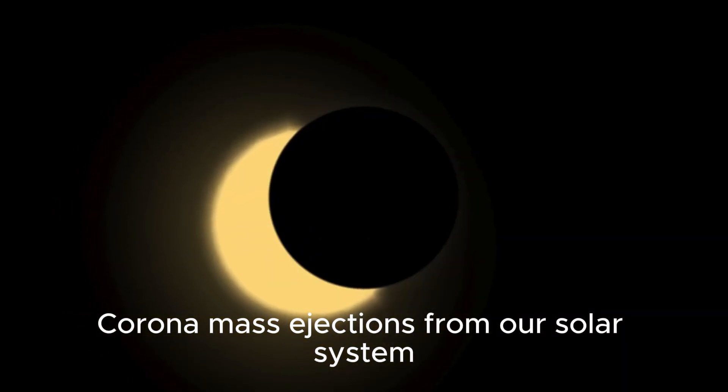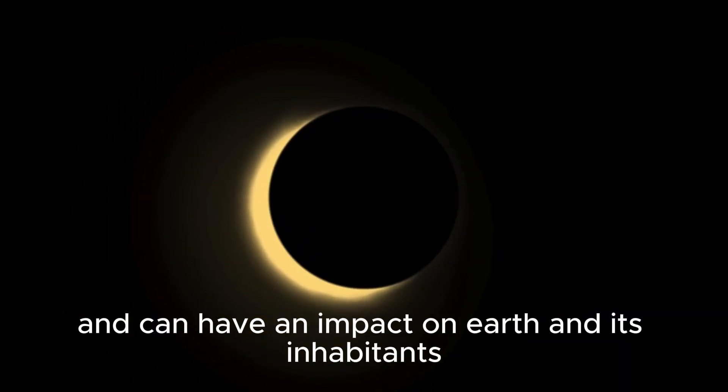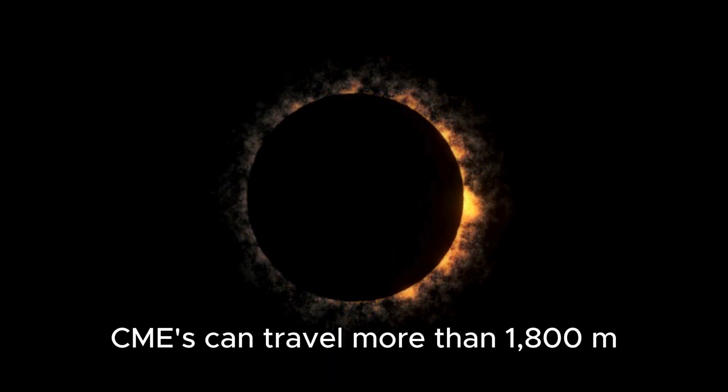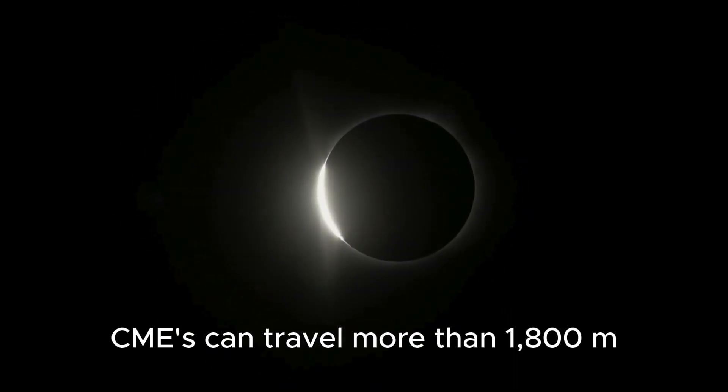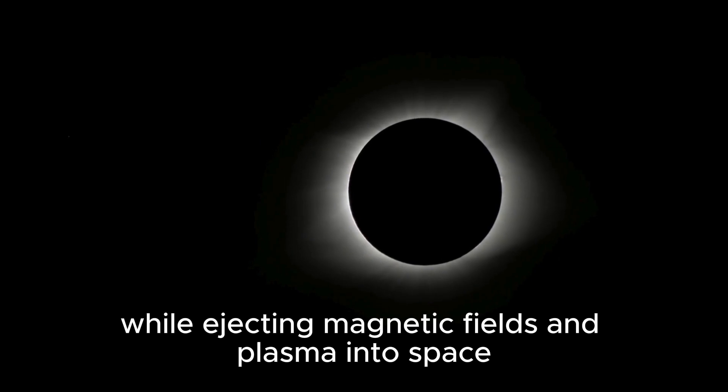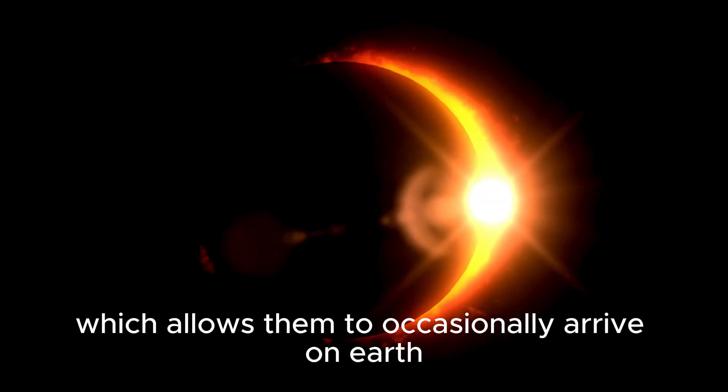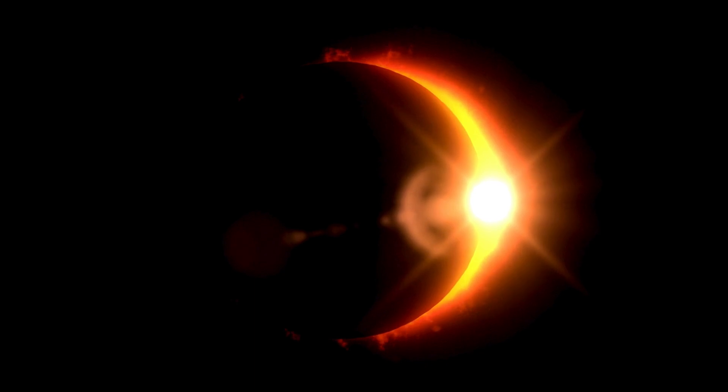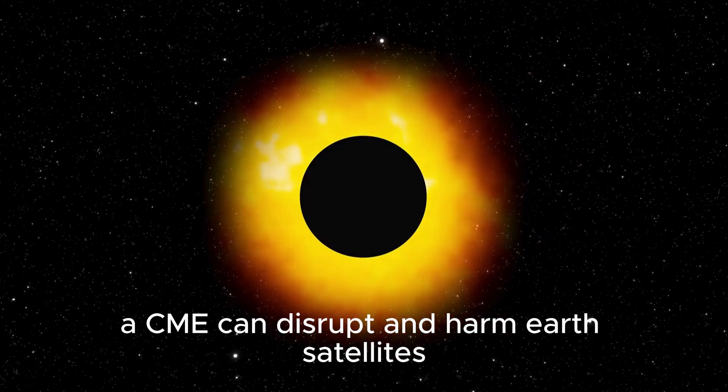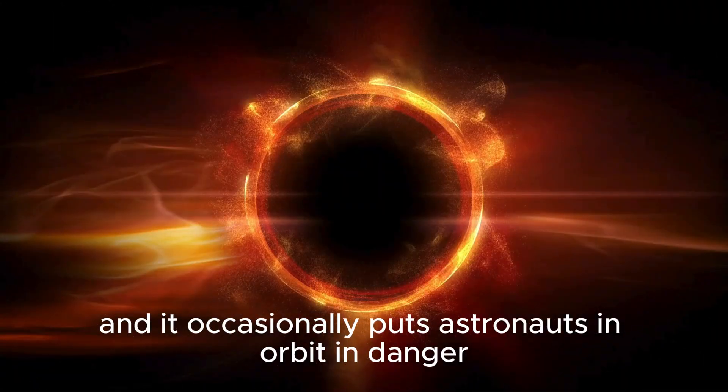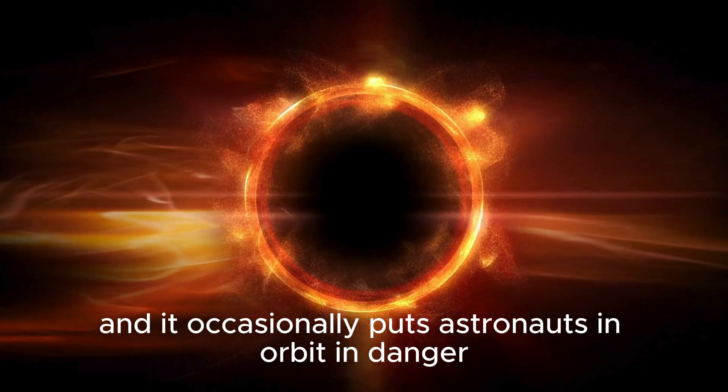Coronal mass ejections from our solar system occur very frequently and can have an impact on Earth and its inhabitants. CMEs can travel more than 1,800 miles per second while ejecting magnetic fields and plasma into space, which allows them to occasionally arrive on Earth in a matter of hours. A CME can disrupt and harm Earth satellites and power infrastructures when it occurs on the side of the Sun that faces the planet, and it occasionally puts astronauts in orbit in danger.